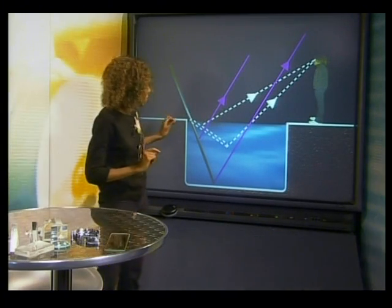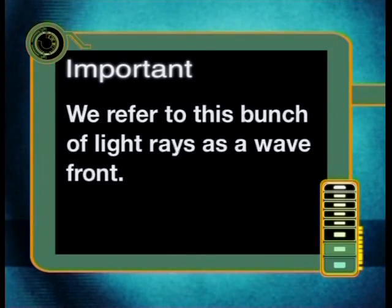What is actually happening is that when light moves towards a boundary, like moving from air into water, it may be reflected at the boundary or it may cross the boundary. When this happens, light may change direction. Although we draw only a thin line to represent the path that light travels, the line actually represents a whole bunch of light rays together. We refer to this bunch of light rays as a wave front.